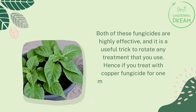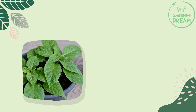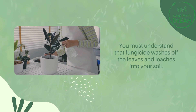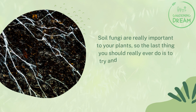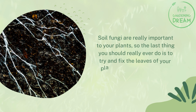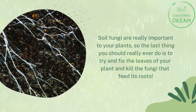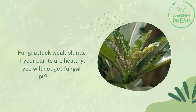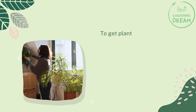For example, if you treat with copper fungicide for one month, use sulfur fungicide the next month. You must understand that fungicide washes off the leaves and leaches into your soil. Soil fungi are really important to your plants, so the last thing you should do is try to fix the leaves of your plant and kill the fungi that feed its roots.